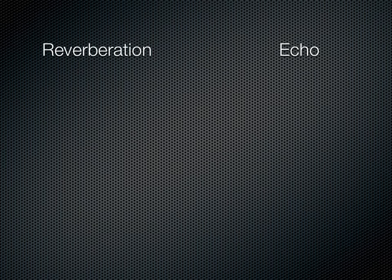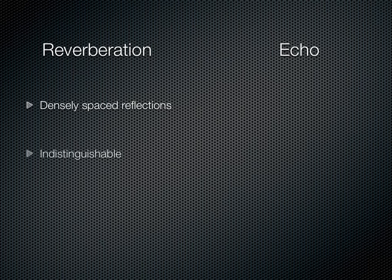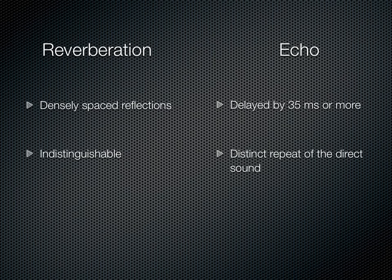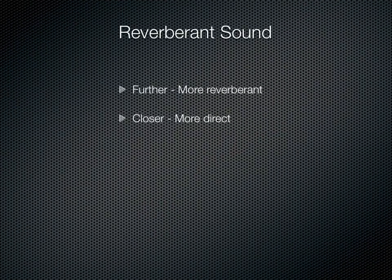Echo is the term often used synonymously with reverberation, but that's incorrect. Remember, reverberation is densely spaced reflections created by random, multiple, blended repetitions of a sound — it is indistinguishable. Echo is sound delayed by 30 milliseconds or more, and is a distinct repeat of the direct sound. The further the listener is from the sound source, the more reverberant sound; the closer, the more direct.